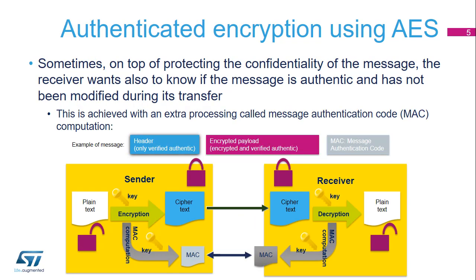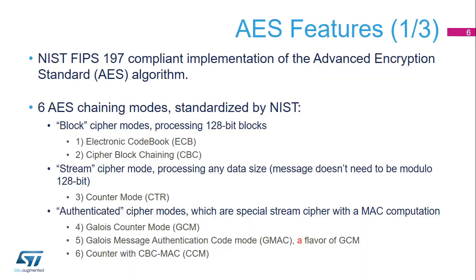Appending a message authentication code to the ciphertext enables the receiver to confirm that the message has been originated by the expected sender. The AES block is capable of generating the MAC, along with data encryption. The National Institute of Standards and Technology, or NIST, develops Federal Information Processing Standards, or FIPS, publications specifying cryptographic standards.